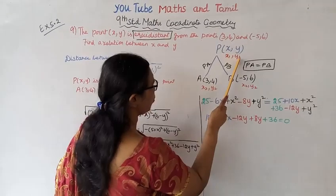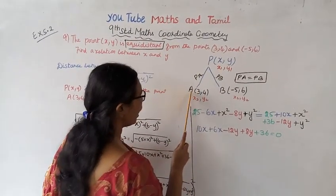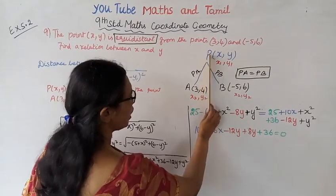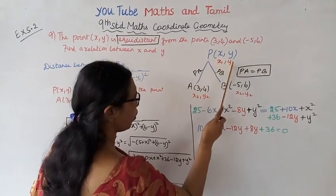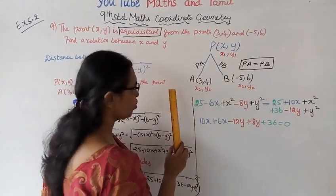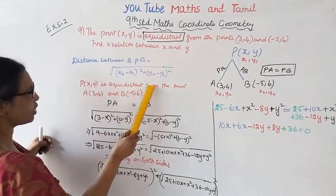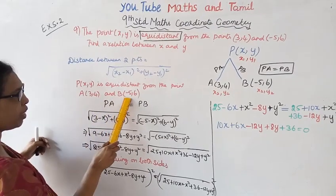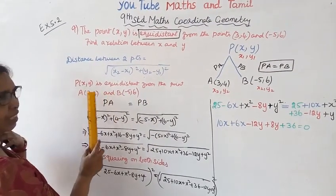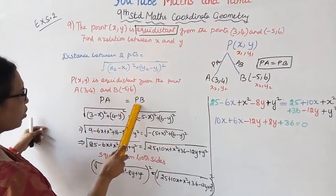This is x1, y1. A is x2, y2. P(x,y) is equidistant from point A(3,4) and B(-5,6). PA equals PB.